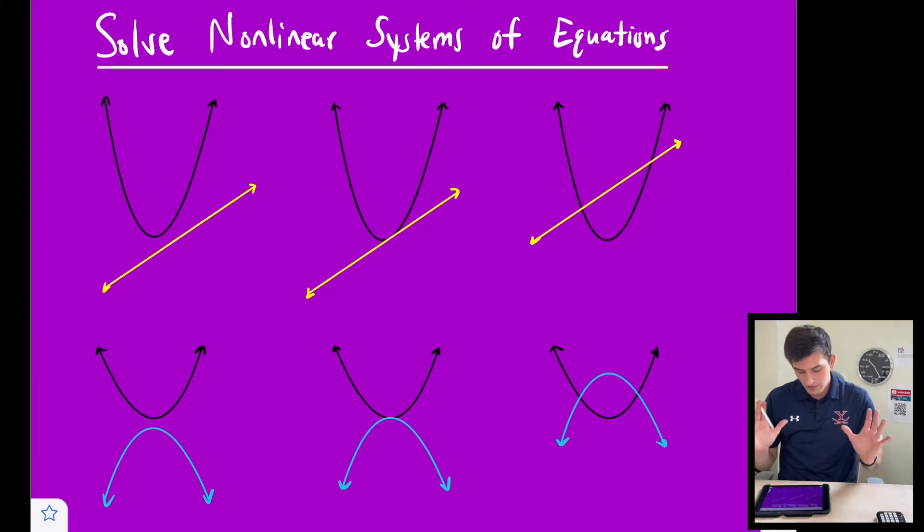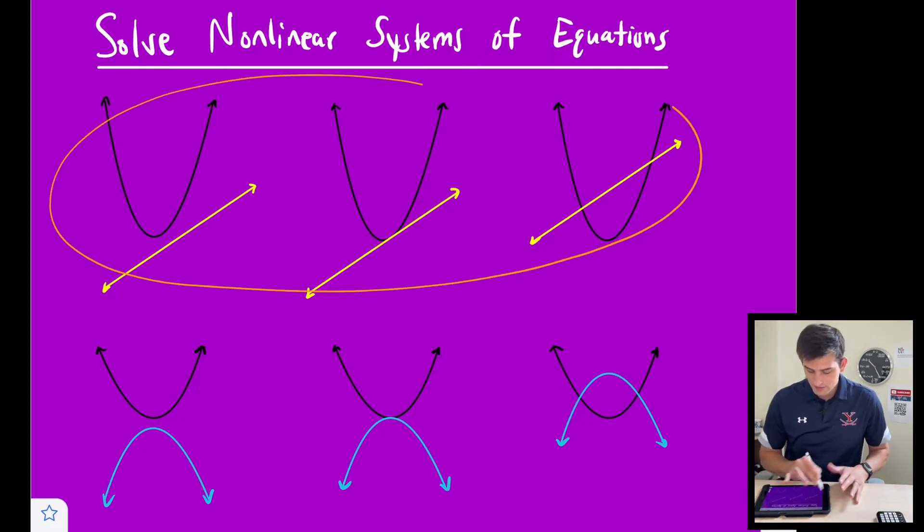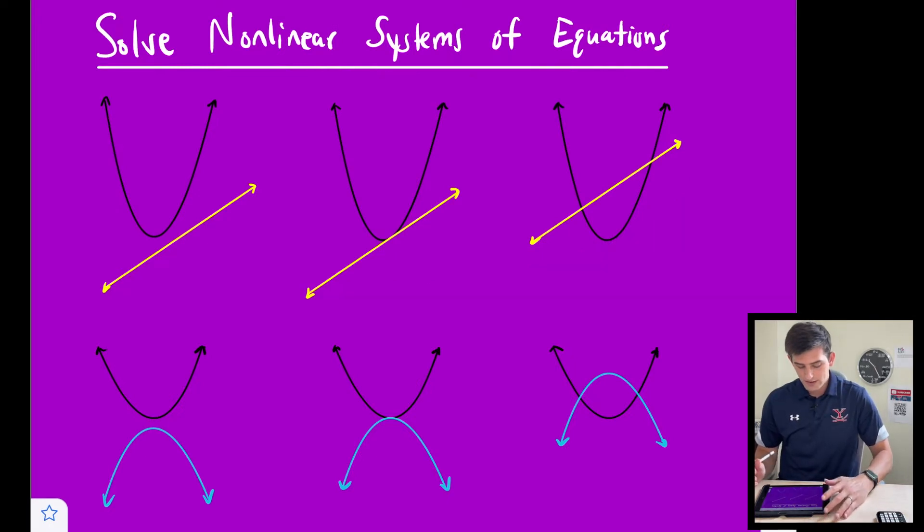So at the beginning, or on the screen right now, we see a couple of different things. We see at the top three parabolas with three lines, and that's representing a quadratic function and a linear function. So if we have a system with those two types of equations,